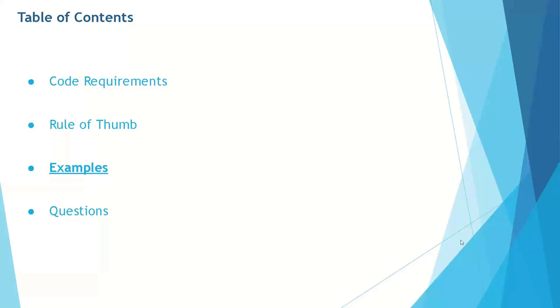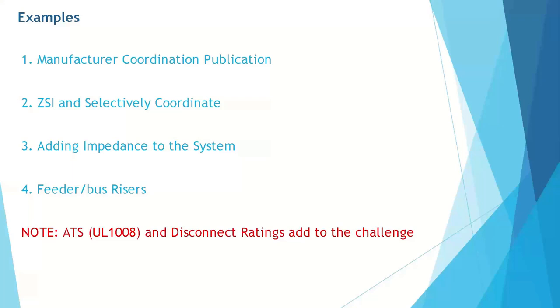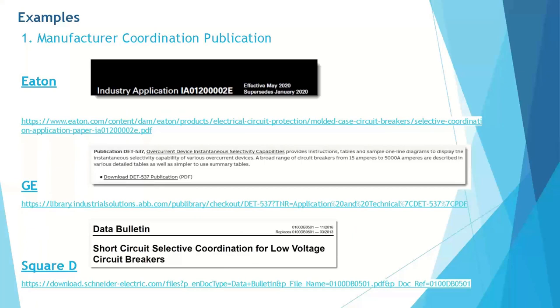Moving on to the examples, we'll see some examples of using the manufacturer's coordination publications, zone selective interlocking for selective coordination, adding impedance to your system, and feeder bus risers. I wanted to note that ATS and disconnect ratings do often create a challenge here, but we're not going to go into that. For the first example with manufacturer coordination publications, I've got here on the screen three of our most common manufacturers that we deal with. It's extremely important to get a copy of these publications. We've got some links here provided.